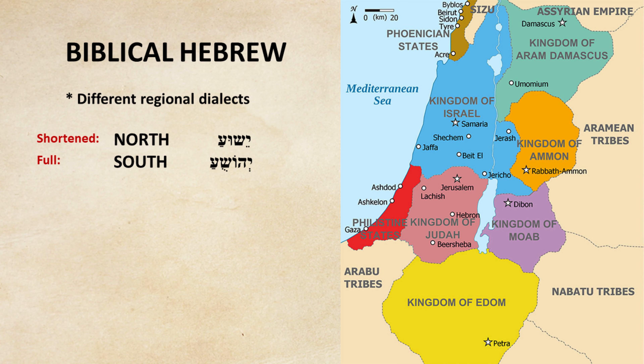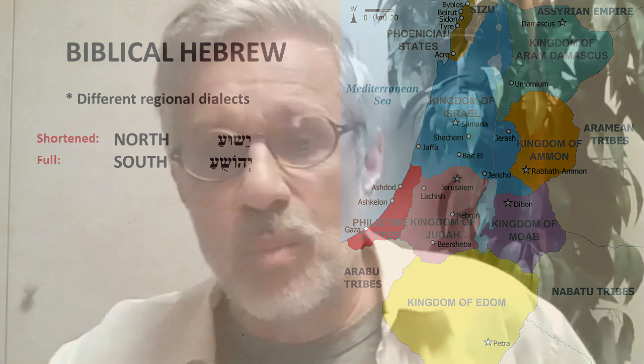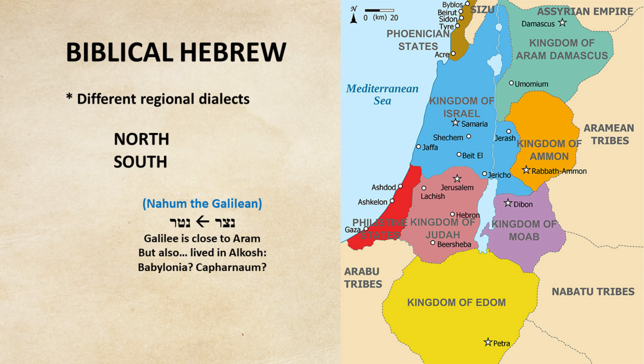We don't know for sure, but it may be that there are two words for the mountain of God: Sinai and Horev — Horeb in English. There are theories that Horev is the northern word and Sinai the southern word. Now you might say, well, both appear in the Torah. But it's possible that, to be inclusive, even if Moses wrote the whole Torah, he wanted to include both dialects so that all the different tribes would understand it.